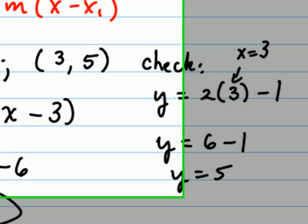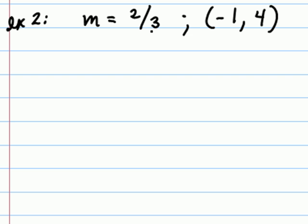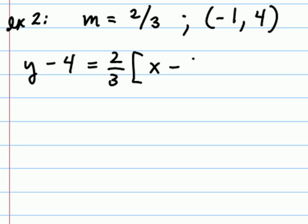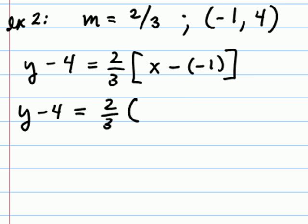Let's look at another example. In this example, we have a slope of 2 thirds and an ordered pair (-1, 4). Again, using the point-slope formula, we would say y minus 4 equals 2 thirds times x minus negative 1. Notice I used brackets here because I recognized the negative 1 value for x. As we continue to write this in slope-intercept form, I will first subtract the negative, making it x plus 1, then distribute the 2 thirds.